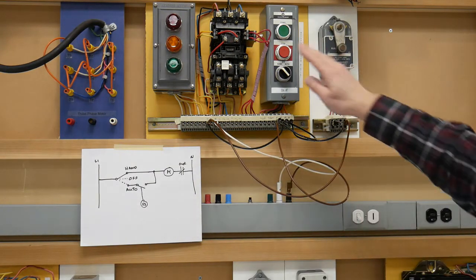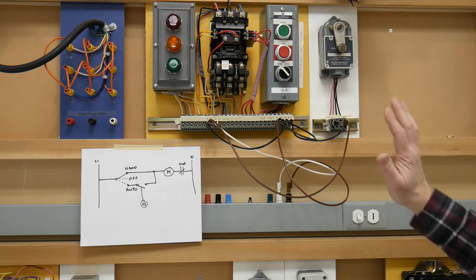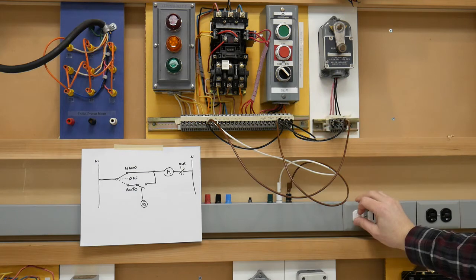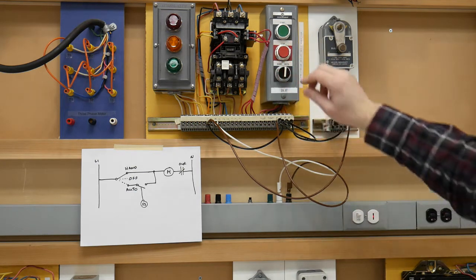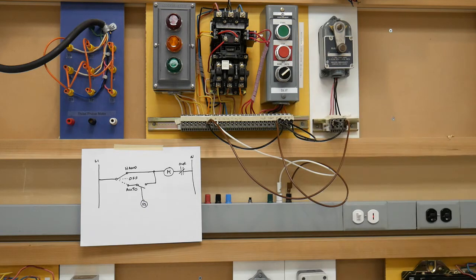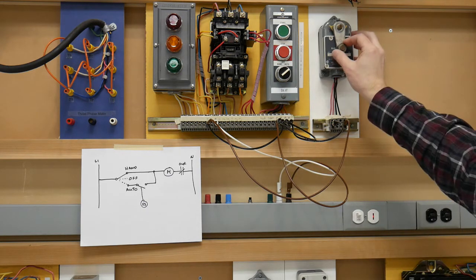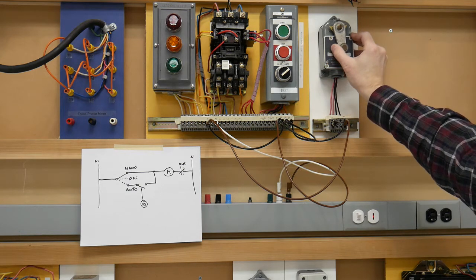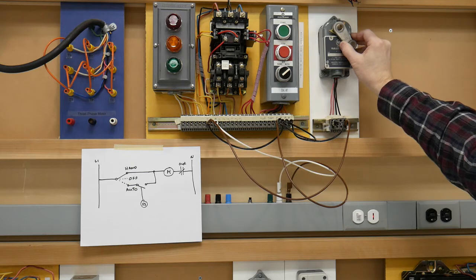So if I'm in the hand position the minute I power up I should be feeding the coil, so don't be alarmed if this thing automatically starts to run, which it does. I'll turn it to off, it stops. We'll go to auto, nothing is happening. And let's pretend this limit switch is the float, so the liquid is slowly filling up and then it hits the point where it's actually going to overflow, now we're running again. So we know that works.